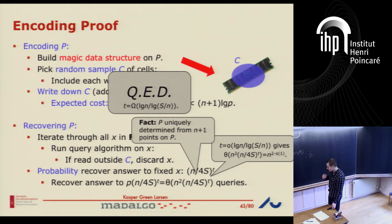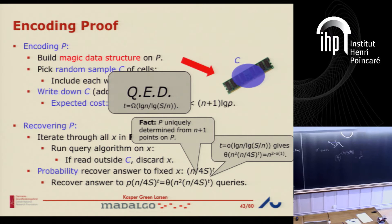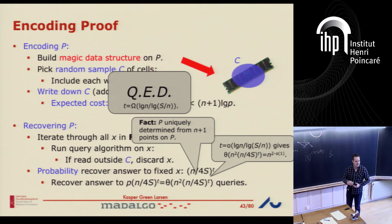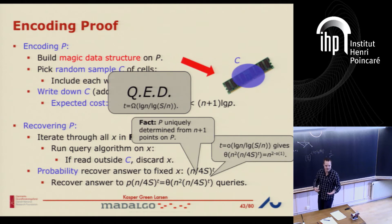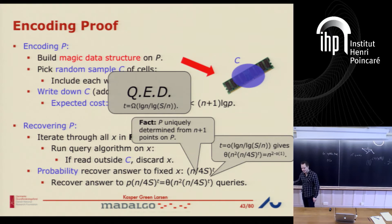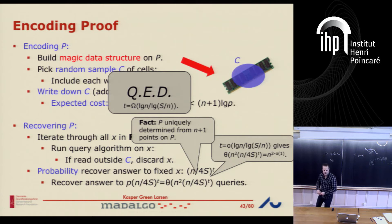A non-deterministic data structure — this lower bound still works for this proof. If I sample the T cells that serve as a certificate for the answer to this non-deterministic data structure, I can still get the answer out. So even though non-deterministic data structures don't exist, the lower bound here will hold if the data structure is allowed non-determinism. Let's look at predecessor search: you're given a set of N elements in some universe U, you store them, and when you get a query q (an integer), you should report the largest element smaller than or equal to q — the predecessor.